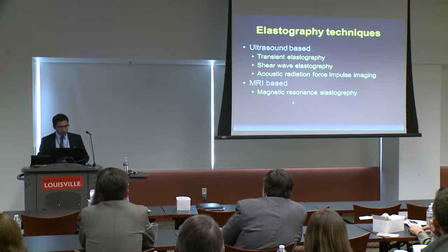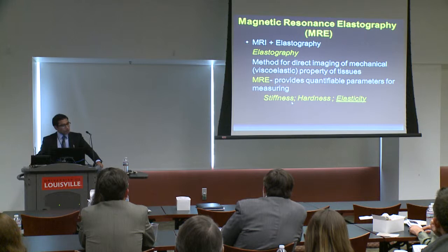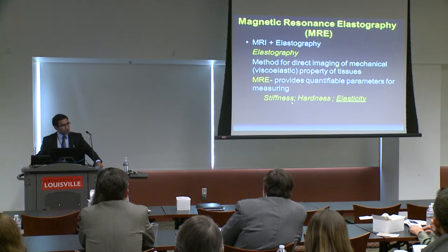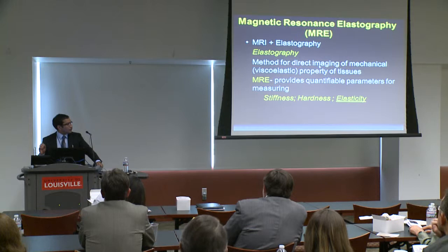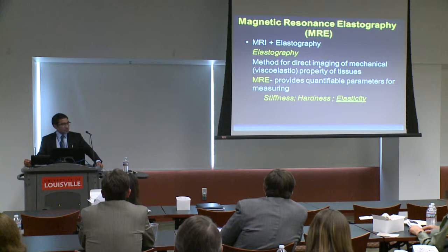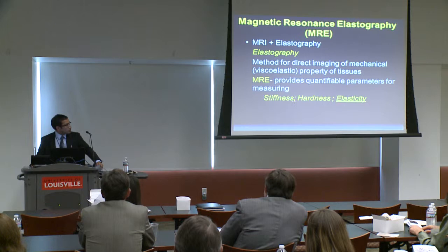We come to newer techniques called elastographic techniques, which can be either ultrasound-based or MRI-based. Magnetic resonance elastography — the first two words stand for the MRI technique, and elastography means the method for direct imaging of mechanical properties of tissues. It provides quantifiable parameters of mechanical properties of tissues. Pure scientists call it elasticity; we use the term stiffness because we cannot differentiate elasticity from viscosity. For clinical terms we use hardness and softness. Stiffness is the most preferred term because it includes both viscosity and elasticity of the tissues.